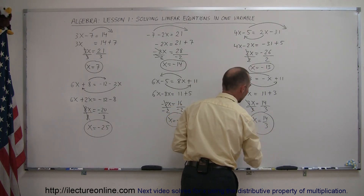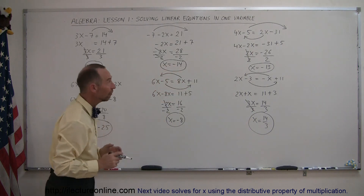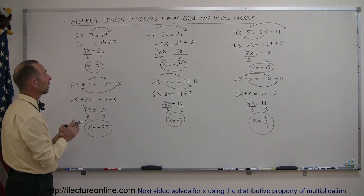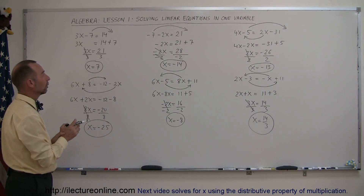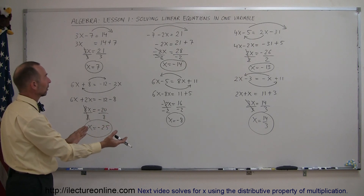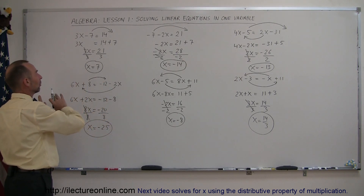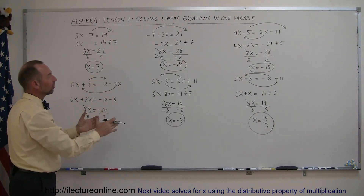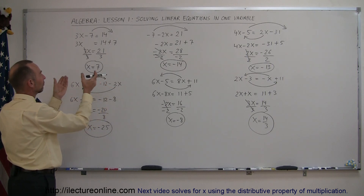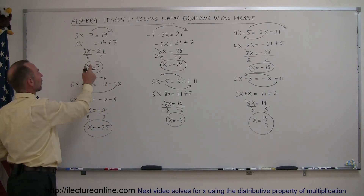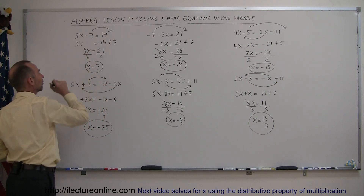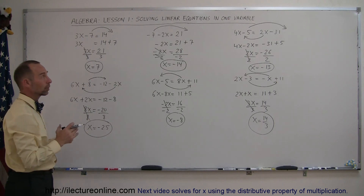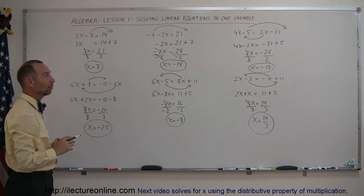And there you go. That's how you solve simple linear equations in one variable. Always move all terms with the variable to one side, move all other terms to the other side, combine like terms, then divide both sides by the number in front of the variable, and you get the answer. On to the next lesson.